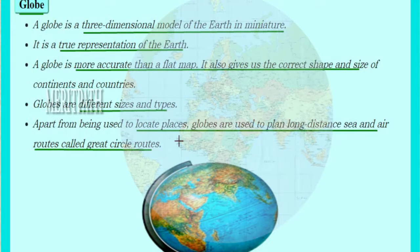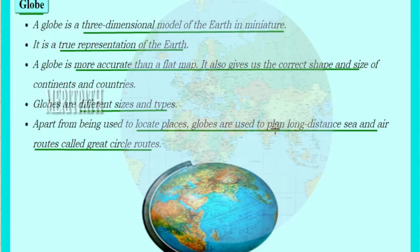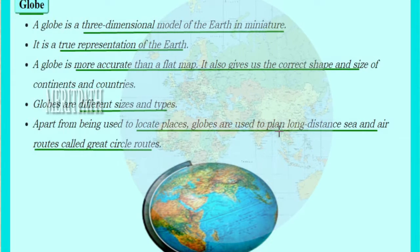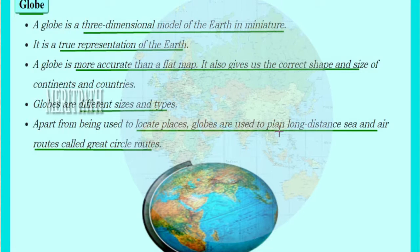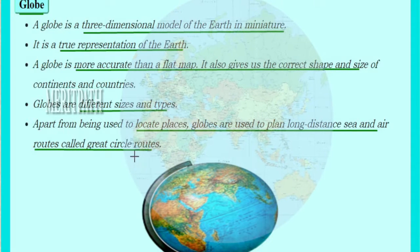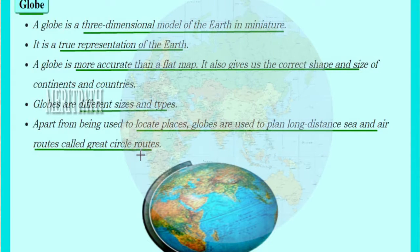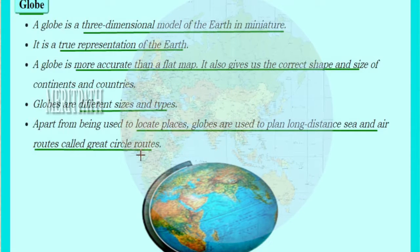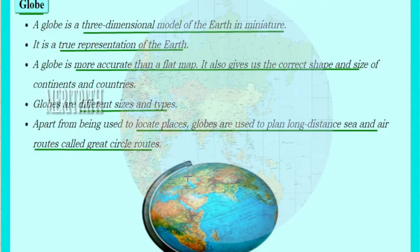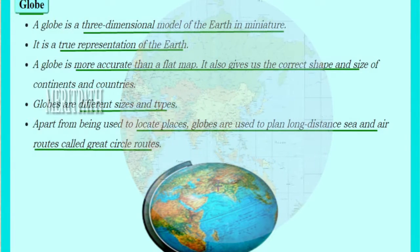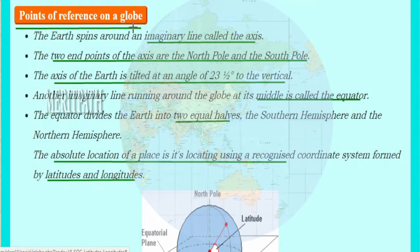The uses of a globe include locating places and planning long-distance travels via sea or air. Planning these routes using a globe is known as great circle routes — air routes and sea routes can both be planned using the globe. This is how a globe looks.